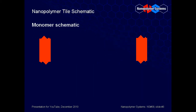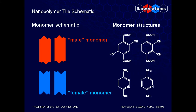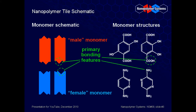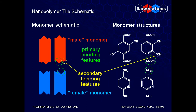This slide shows four straight monomers. On the left are visual schematics of the monomers, displayed as tiles with notches and prongs, with the actual chemical structural diagrams on the right. The structures are arbitrarily labeled as male and female to make the concept of monomer pairing intuitively obvious. The primary bonding features are illustrated as large notches and prongs, and the secondary bonding features as small notches and prongs. The large primary bonding features react with each other, and then the small secondary bonding features react. This tile-based graphic analogy is especially accurate because like primary features do not react with each other, and primary and secondary features also do not react with each other.